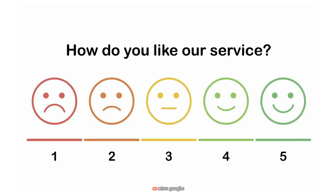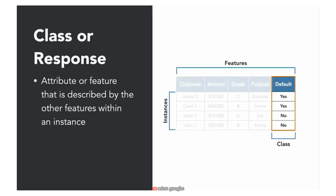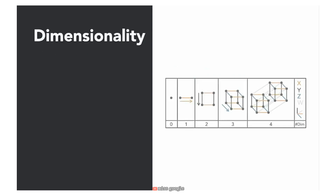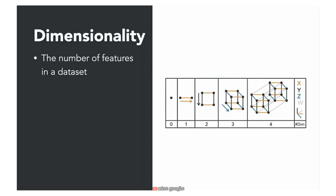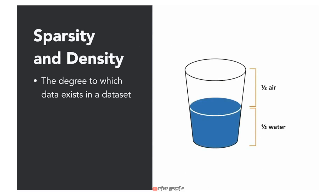Features can also be categorized based on their function. In supervised machine learning, we use the values of independent variables to predict the value of a dependent variable. If the dependent variable is categorical, we refer to it as the class; if it is continuous, we refer to it as a response. The dimensionality of a dataset represents the number of features — higher dimensionality means more detail but also higher computational complexity. Sparsity and density describe the degree to which data exists for features in the dataset — if 20% of values are missing, the dataset is 20% sparse and 80% dense.